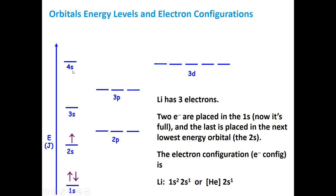This is an orbital energy diagram. You can see the 1s orbital is the lowest. The 2s and 2p are the next shell in an atom, and together these hold eight electrons. The 1s can hold two electrons, and each individual orbital can hold a maximum of two electrons. Going from 2s, 2p, and then in the n=3 shell, we've added d orbitals as well.